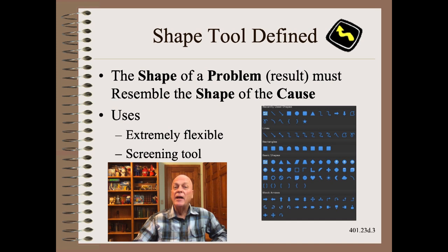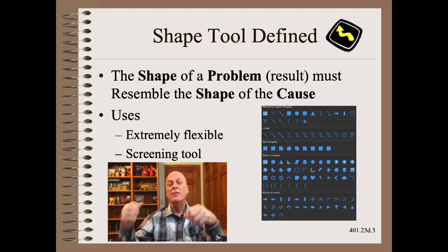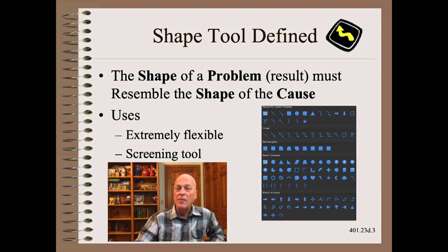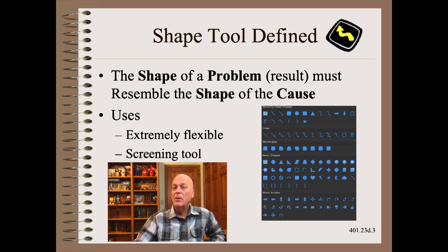The shape tool says that the shape of a problem must resemble the shape of the cause. This tool is one of the most flexible, adaptable, and powerful in our troubleshooting toolbox. It is almost always central to difficult problems such as baggy webs, as you can see in my series Web 201.45 A-R. Let's apply the shape tool to troubleshooting lanes.